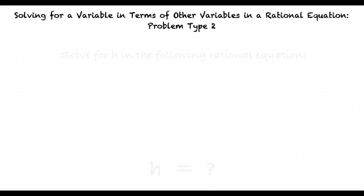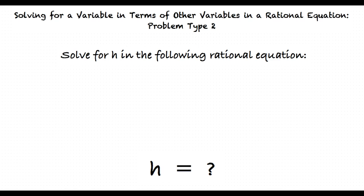Solve for h in the following rational equation. F equals g divided by 4 plus h. Our first step is to multiply both sides of the equation by the binomial 4 plus h.